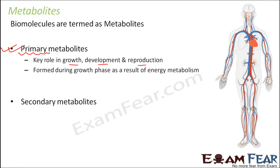When are these metabolites formed? Since biomolecules are formed by a living organism and are needed for growth, they are formed during the growth phase as a result of energy metabolism — that is, as a result of the chemical reactions taking place inside the body of a living organism. These chemical reactions take place during the start of the growth phase so that more and more primary metabolites are produced, and they in turn help in the growth of the organism.